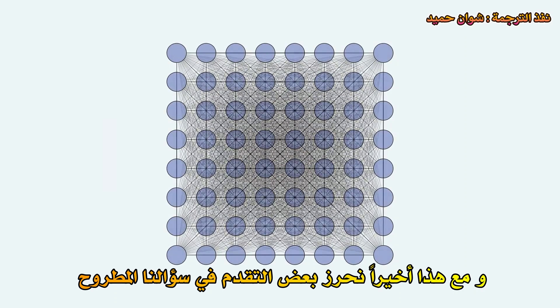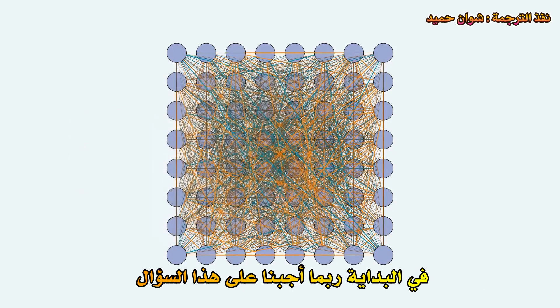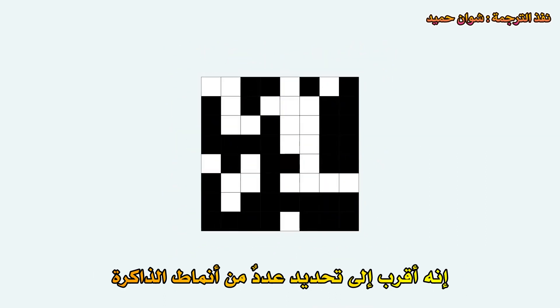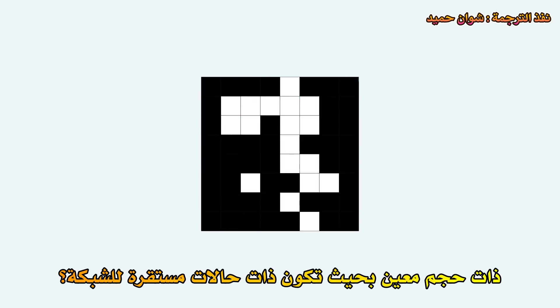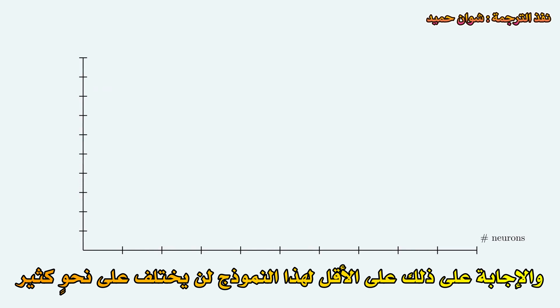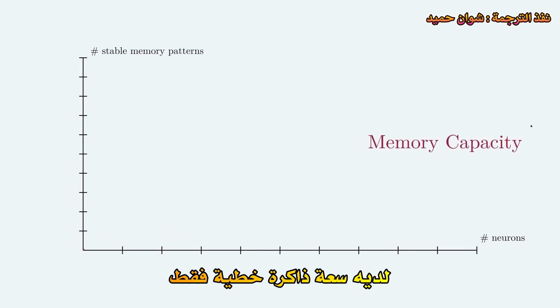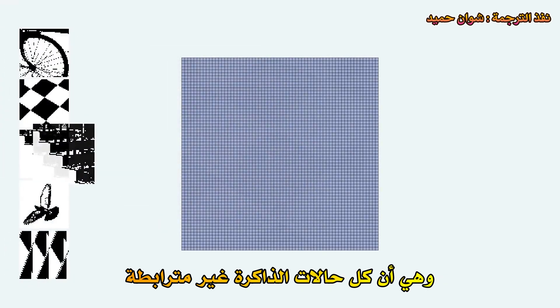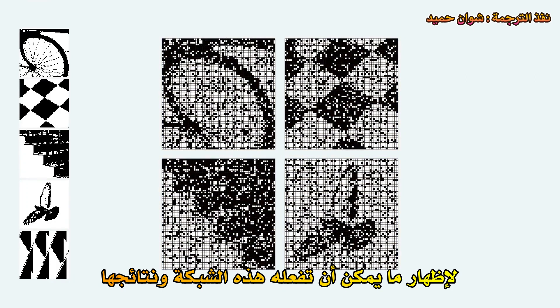And with this, we are finally making some progress on our question from the very beginning of the video: how much memory do you have? Originally, we might have answered by giving some number of bytes. But now the question presents itself very differently. It's more like: how many memory patterns can we store in a recurrent network of a given size, such that they are stable states? And the answer is, at least for this model, not very many. The original paper showed that this model has only linear memory capacity — the number of stable states grows as a linear function of the size of the network. Plus, there's a hidden assumption that all memory states are uncorrelated, which for any set of pictures like this is totally not the case.